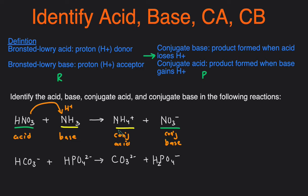So you could just remember it's the opposite, but let's also make sense of this. Let's take a look at the definition again. Conjugate base is the product that's formed when an acid loses an H+. Well, so if this is the acid and it loses H+ and it becomes NO3-, that's why it's the conjugate base.